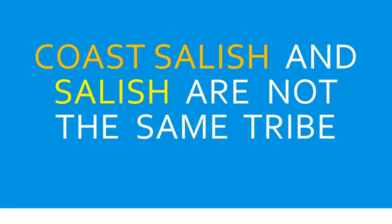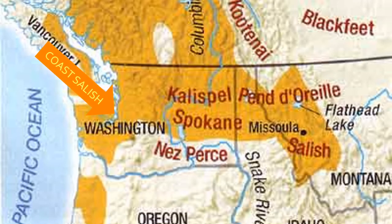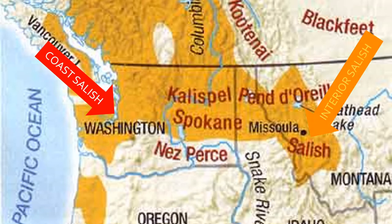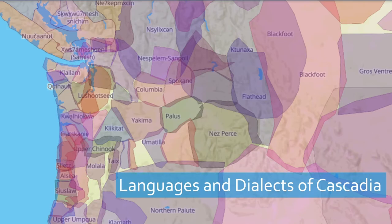Some coastal people consider themselves halibut people, as halibut is the species closest to them — but the common species that runs through all seasonal rounds is salmon, and that creates a common identity. I also wanted to point out that Coast Salish and Salish are not the same. Coast Salish is in the Salish Sea area, while interior Salish is in what we would call modern-day Montana. They are part of the Salishan language group but are very different peoples.